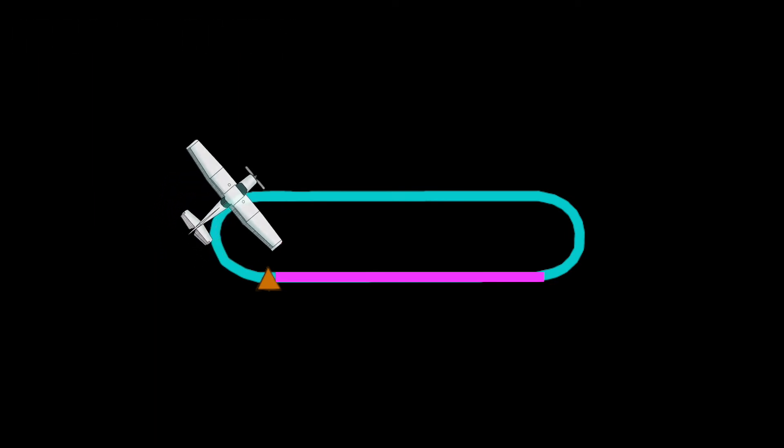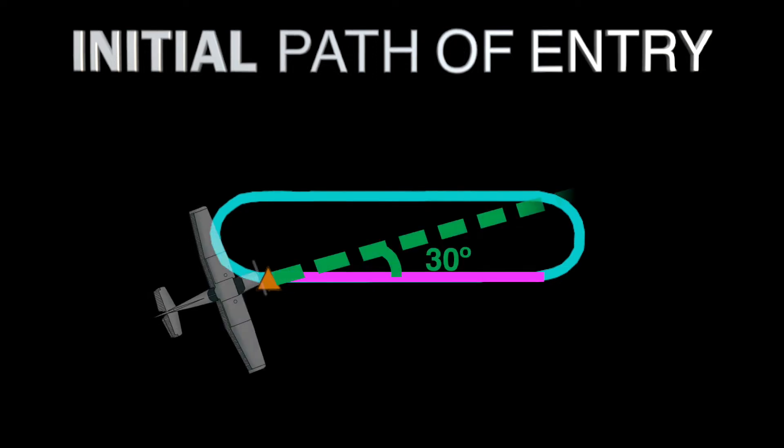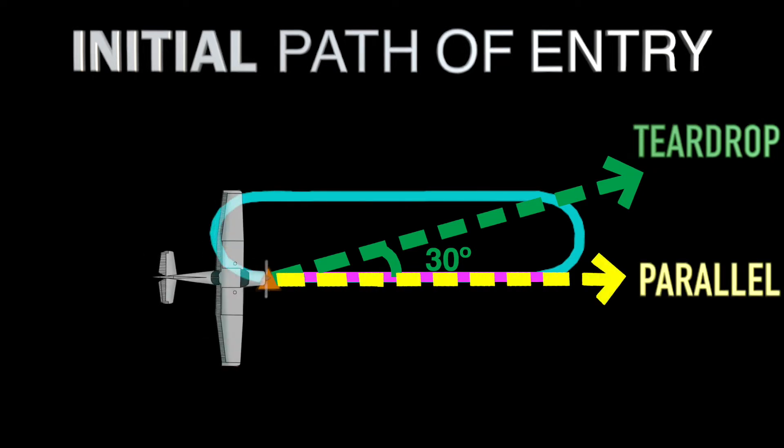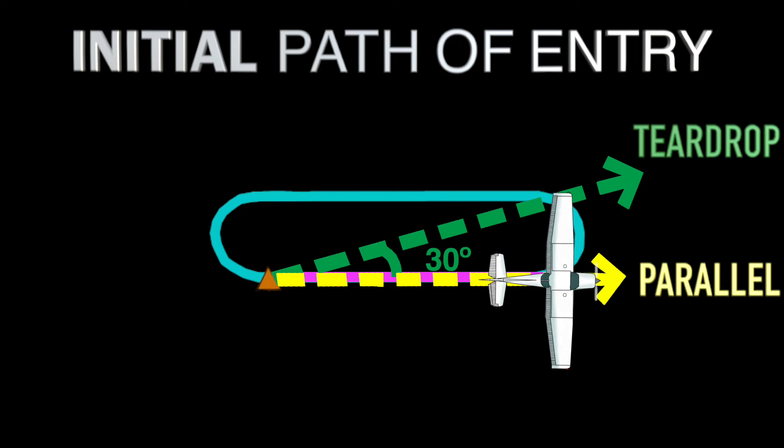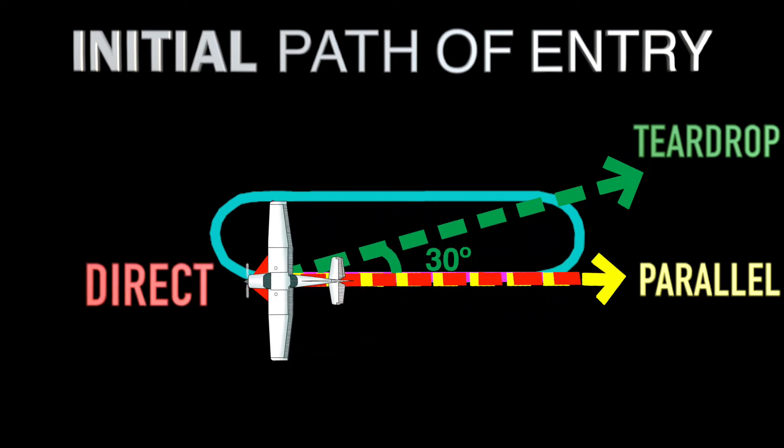For each of these entries, I want to emphasize their initial segment in the entry procedures. In other words, what angle of direction will the aircraft first take upon starting the entry procedure. As we just saw, the teardrop will begin with a 30 degree course off the inbound leg. And the parallel entry requires us to overlap the inbound leg going in the opposite direction from the fix and the direct entry allowing us to flow directly towards the fix along the inbound leg. Focus on these three initial paths of entry while comparing their relative positions to the aircraft in any given situation.